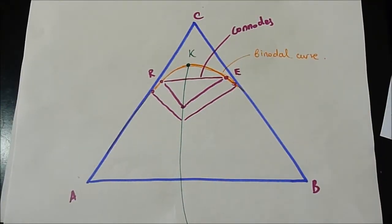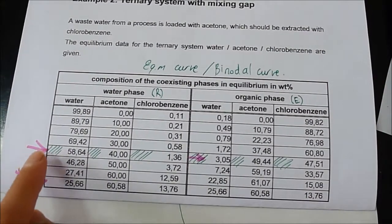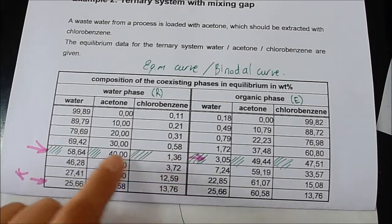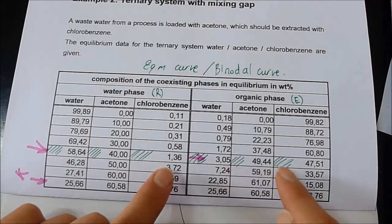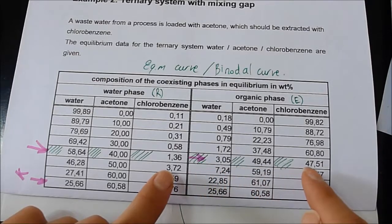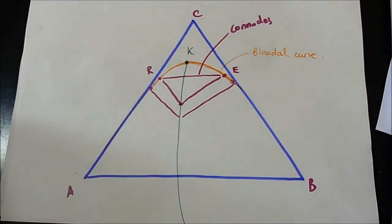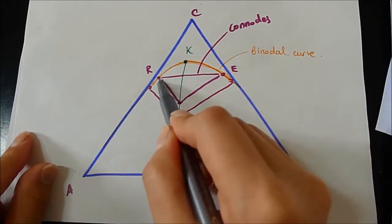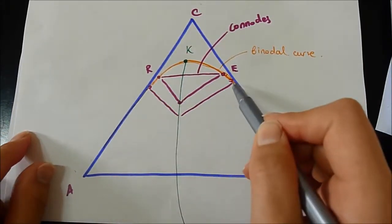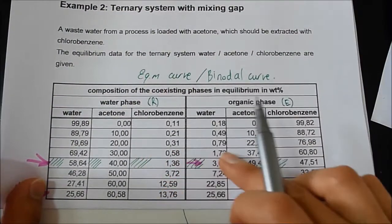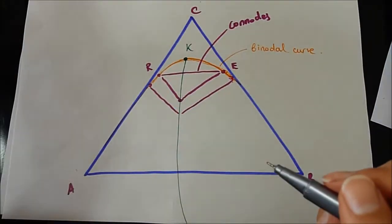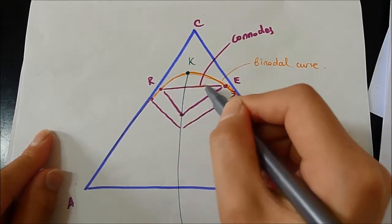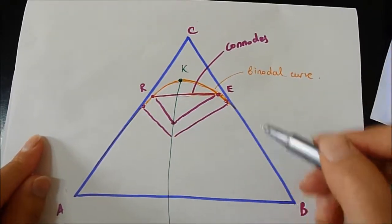An interesting data point is, for example, if I take this point here. This is the raffinate phase point in the diagram, and this is the point of the extract phase. When I draw it, these are the points that are coexisting points. This is the R point, this is the E point. When you connect a line to R and E, you create a conode.